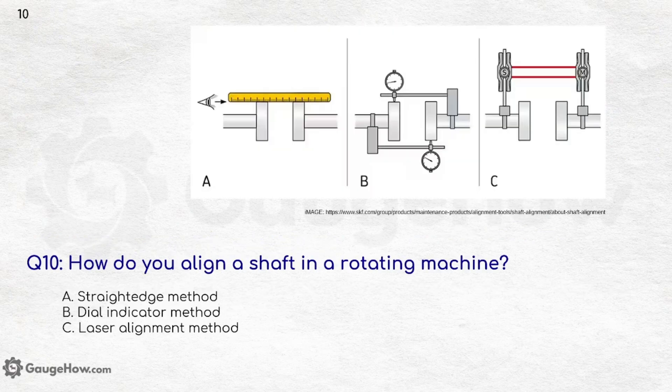How do you align a shaft in a rotating machine? As you can see in the figure, three methods are shown: first, the straight edge method; second, the dial indicator method; and third, the laser alignment method.